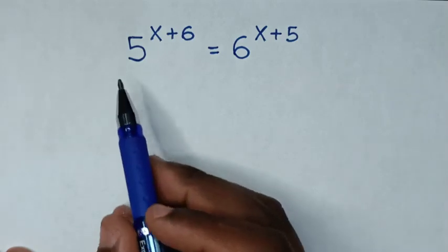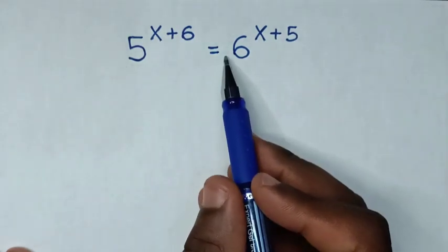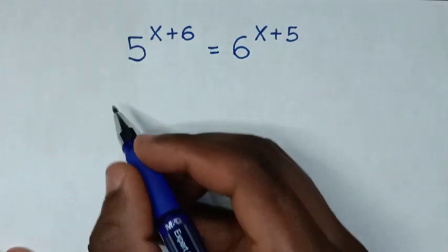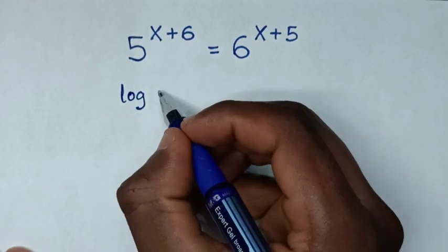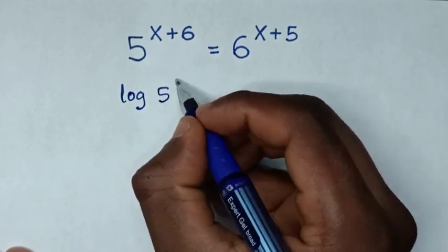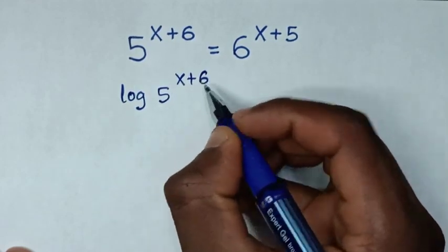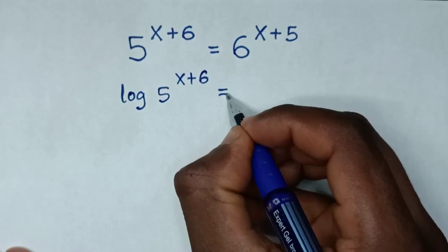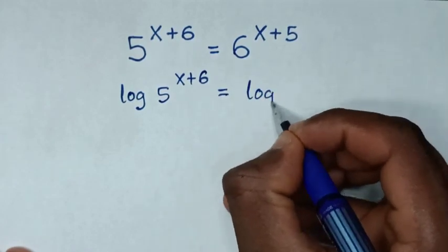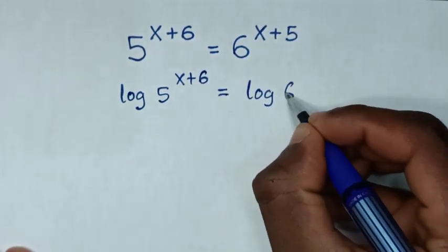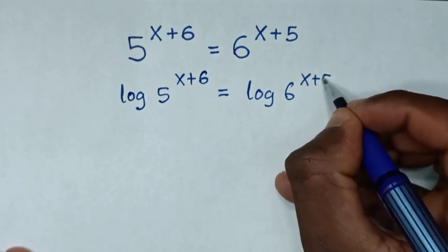So first we'll apply log in both sides. So it will be log of 5 power of x plus 6 is equal to log of 6 power of x plus 5.